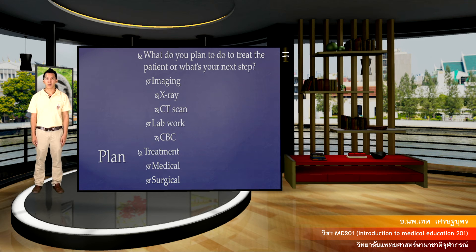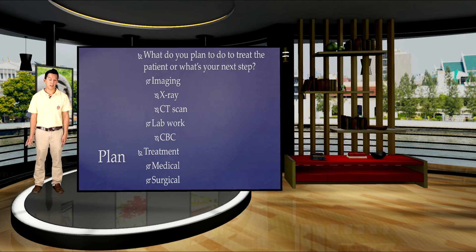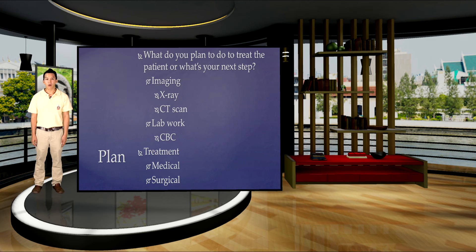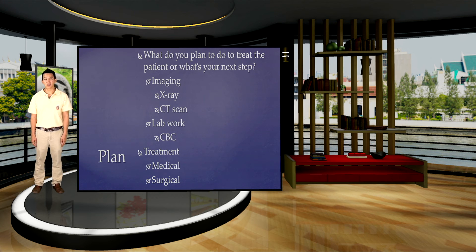The plan part, or P part of the SOAP note, includes your next steps in treating the patient. This can include imaging such as an X-ray, CT scan, or MRI. Additionally, we could consider lab work to evaluate any abnormalities, including a complete blood cell count or liver function tests. Finally, we consider treatment options — whether to prescribe medicine as the primary treatment or whether there is a surgical need for the patient.